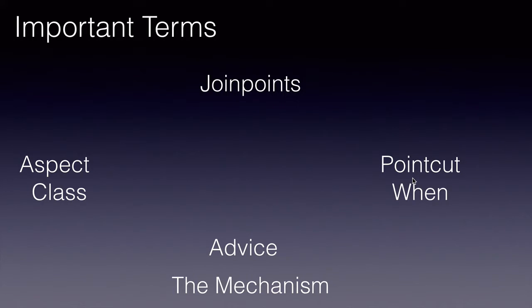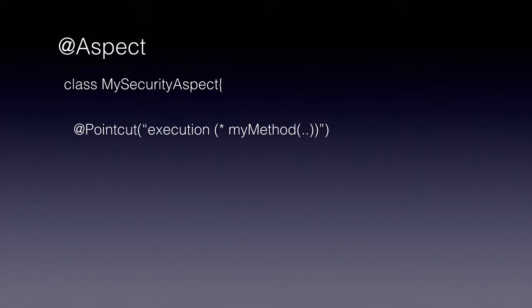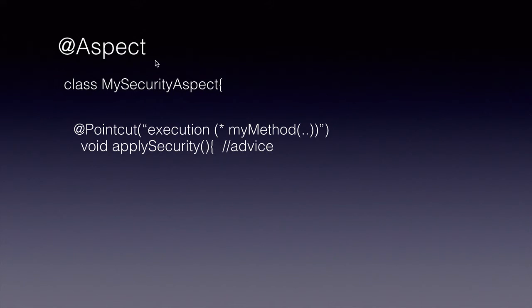Let's take a look at all these while using Spring and AspectJ. When we create an aspect, we mark it with an @Aspect annotation from AspectJ. Within this class, we create a number of advices to address a particular concern, which in this case is security for our application. The applySecuirty method is an advice in which we will be writing all the logic to apply security for other classes and their methods.